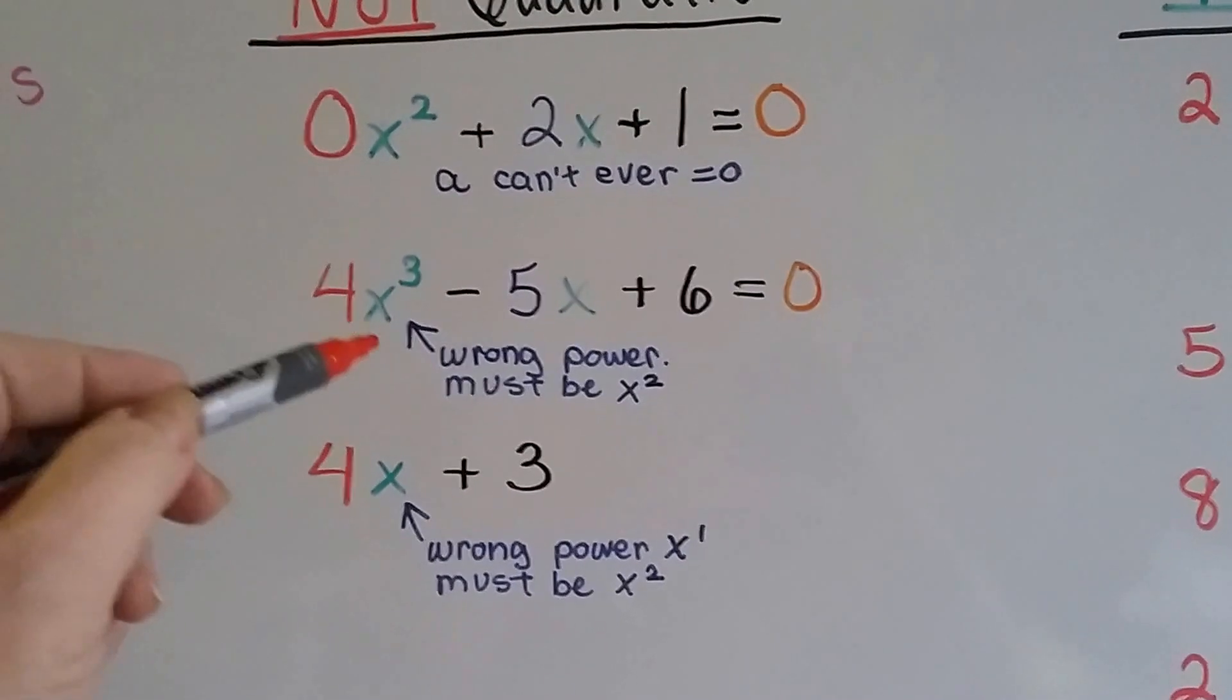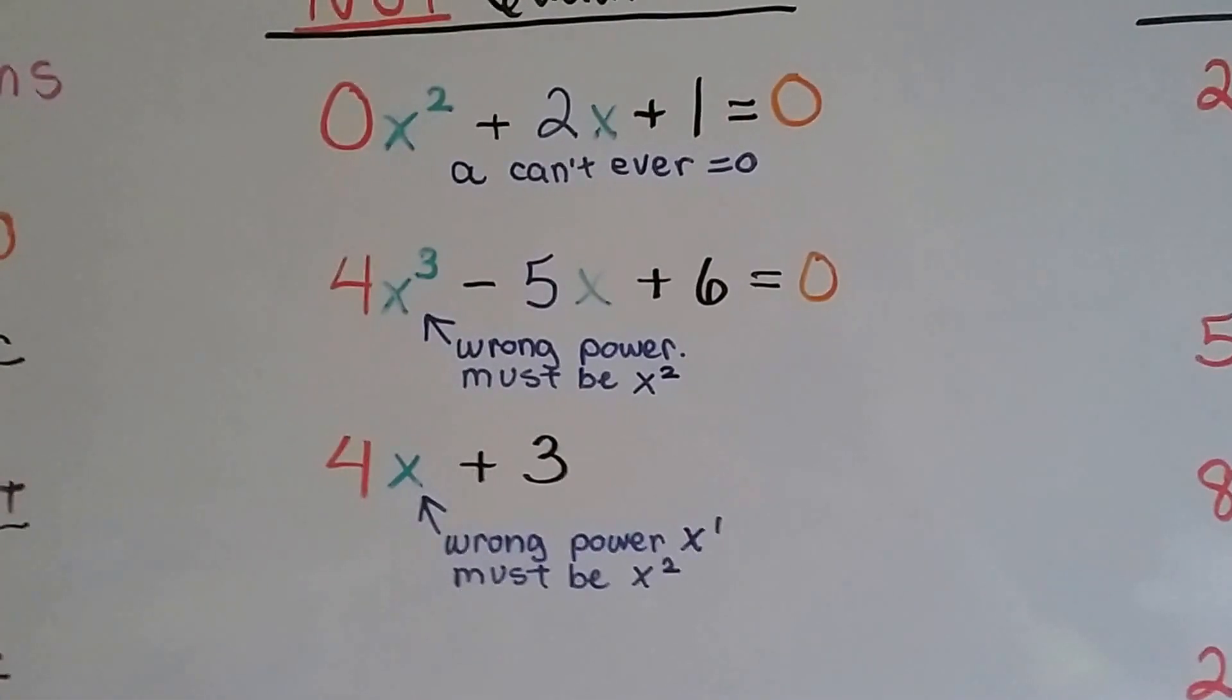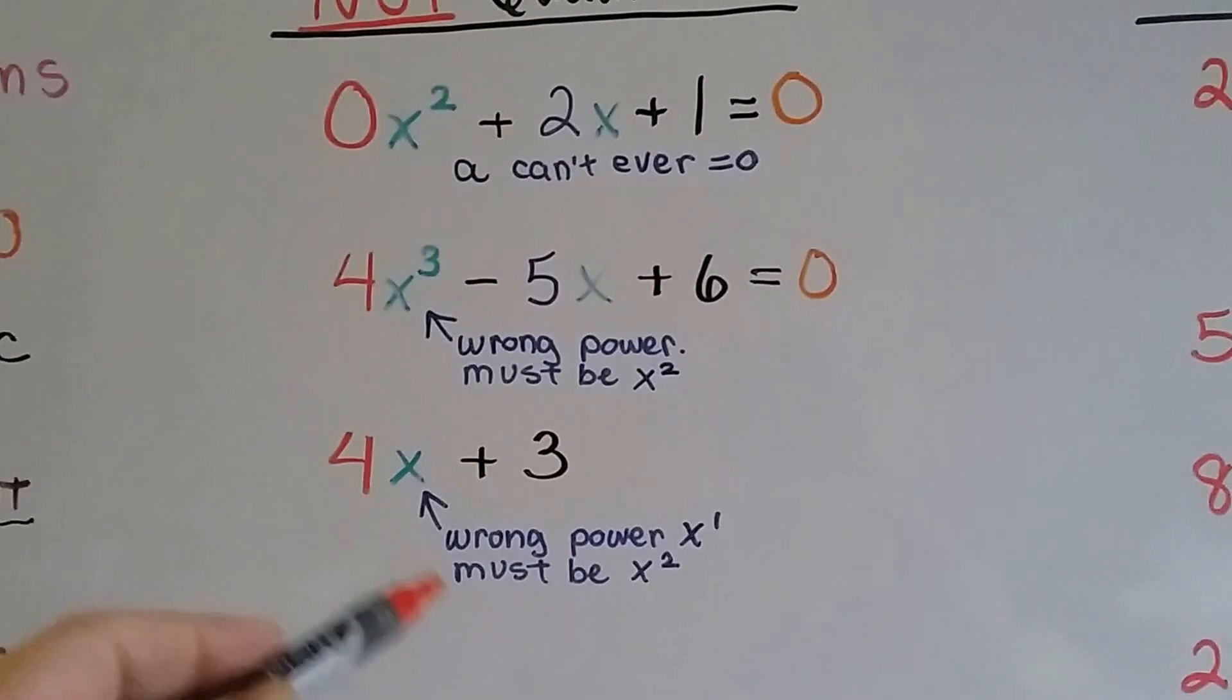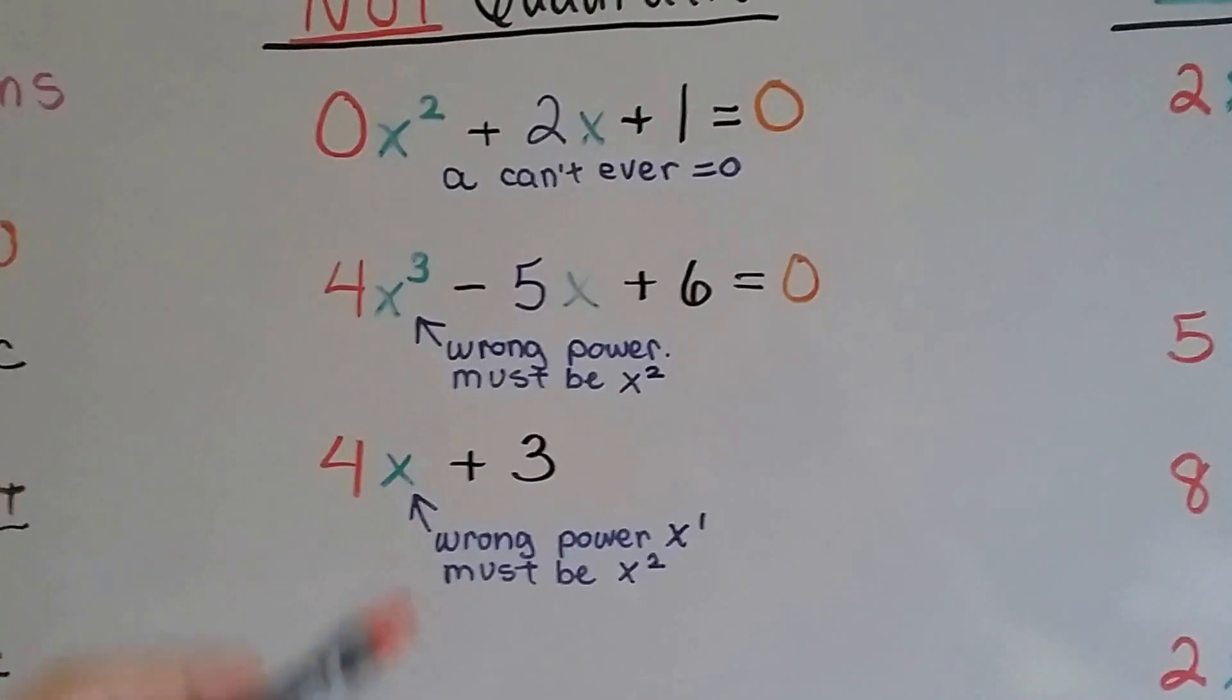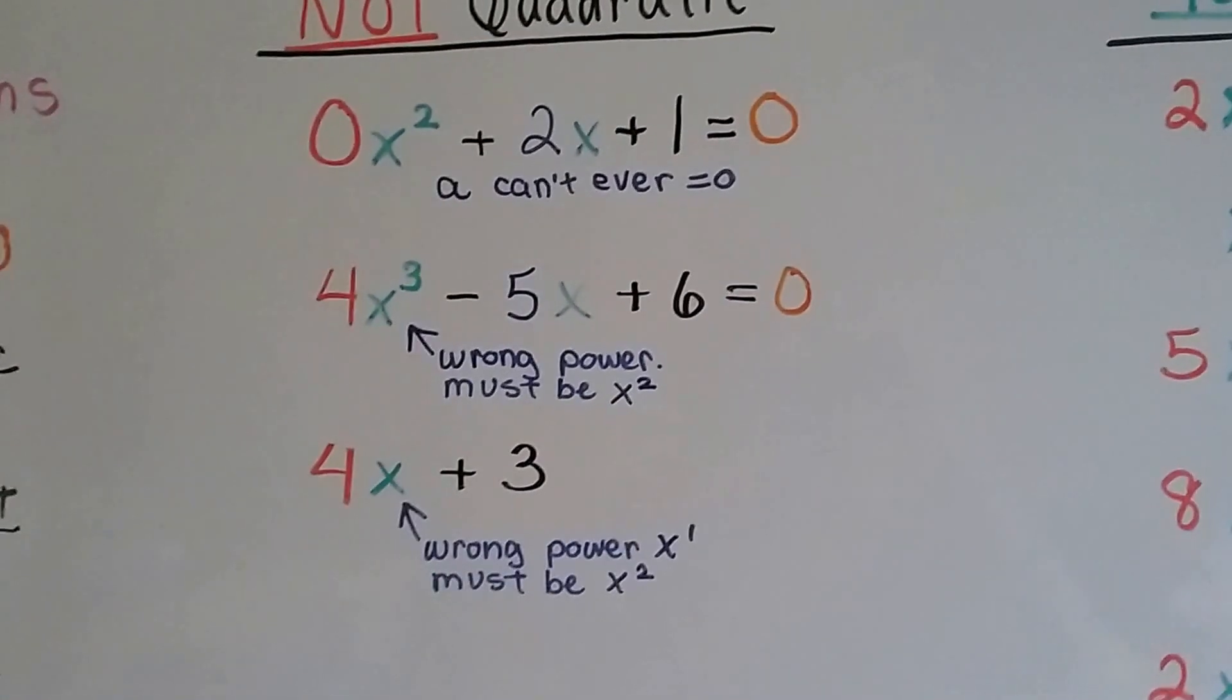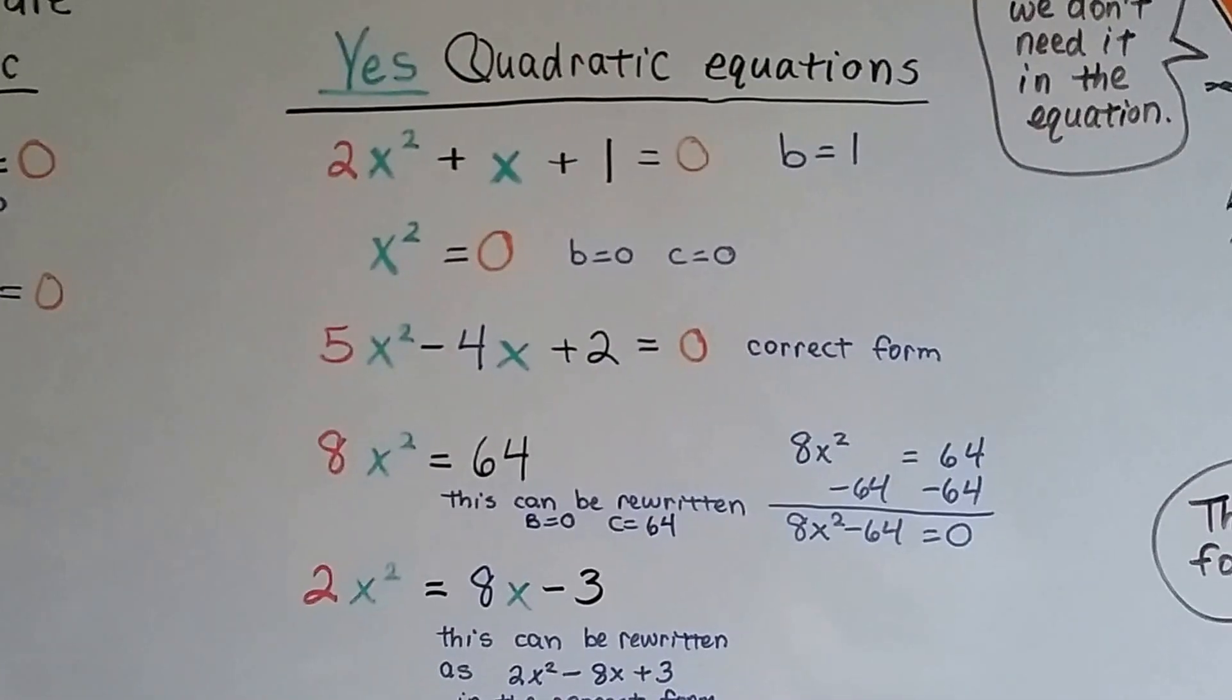In this one, the x has the wrong power. It should be x squared. In this one, it's got the wrong power. It's x to the first when there's no exponent, right? So that's the wrong power. It's got to be x squared. Now, what about this side?